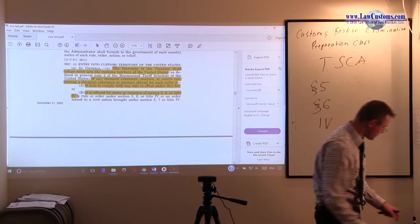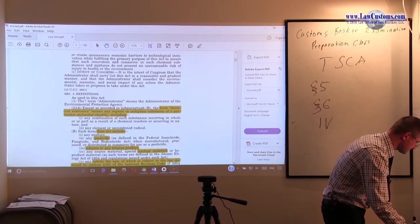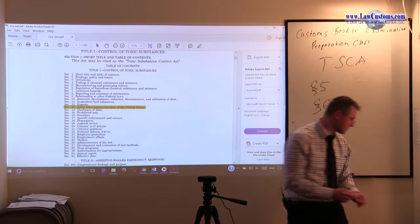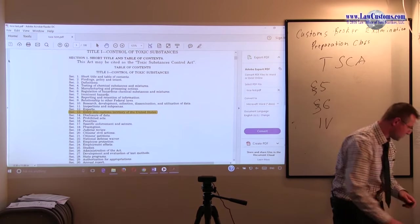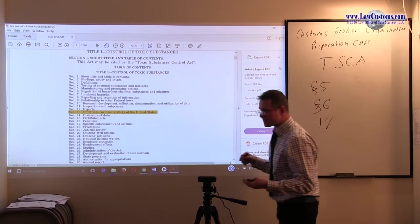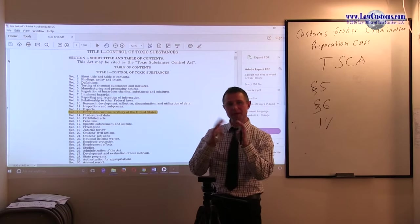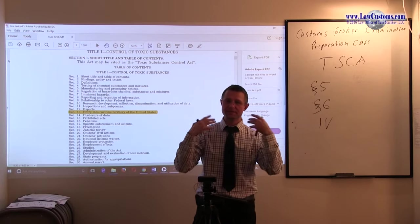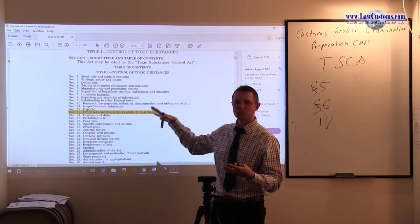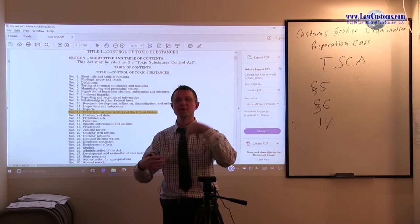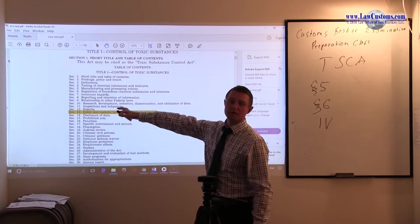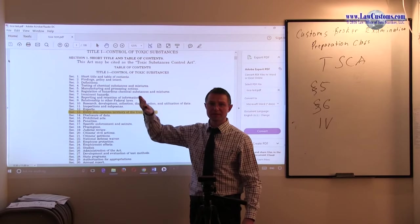Section 5 deals with manufacturing or processing notices. Whenever you make a new chemical—a new molecular formula combination—you cannot just bring it into the country. You have to go through this procedural protocol of notifying the Environmental Protection Agency, listing the chemicals, and going through the motions. For customs brokers, this isn't usually relevant unless the importer comes in asking for help.